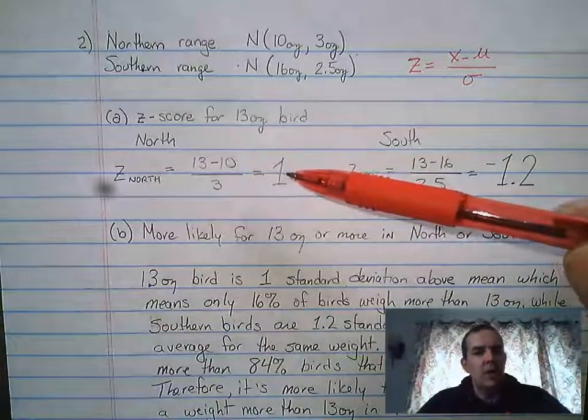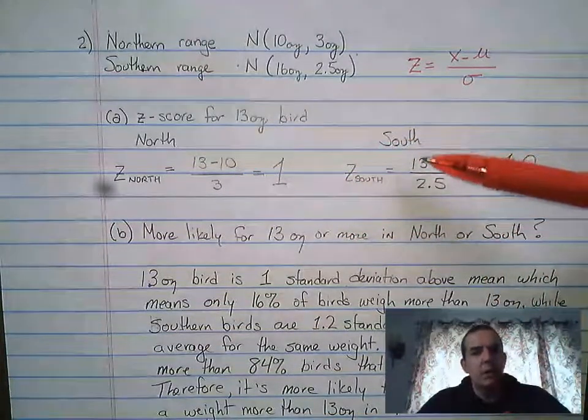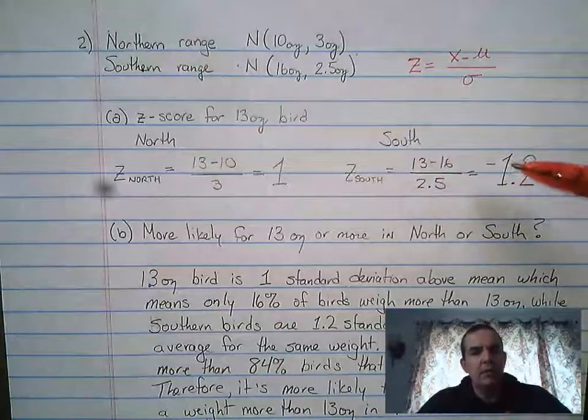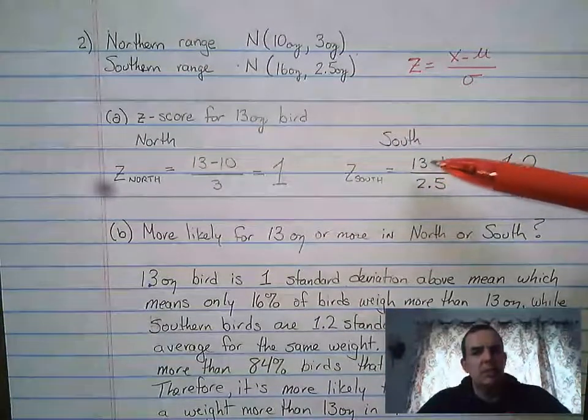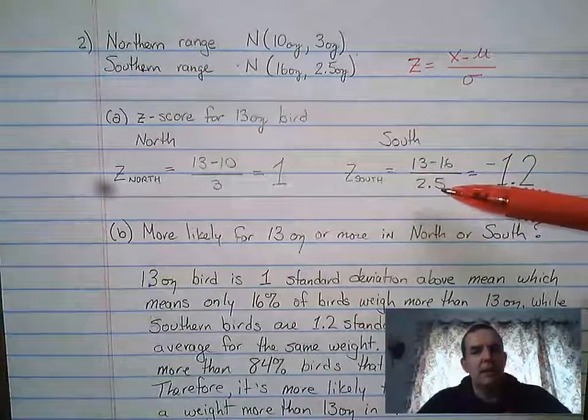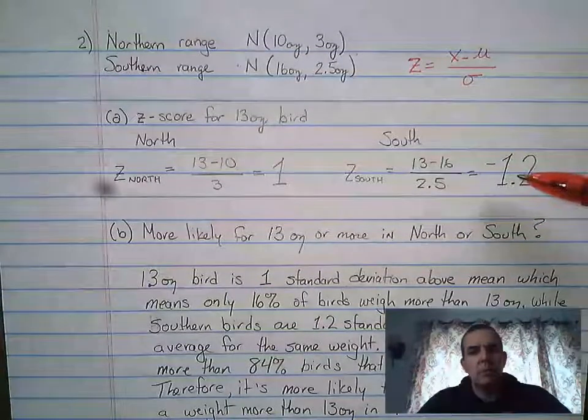Whereas in the south, we have a z-score of negative 1.2, because we do 13 minus 16 divided by 2.5, which gives us a z-score of negative 1.2.